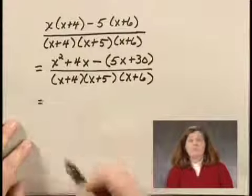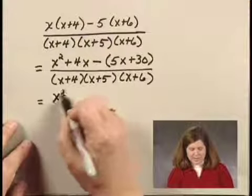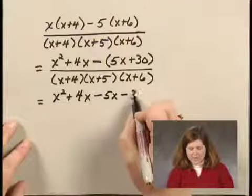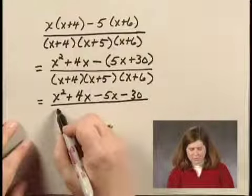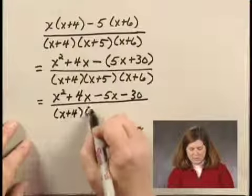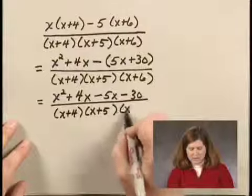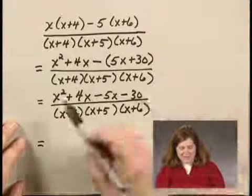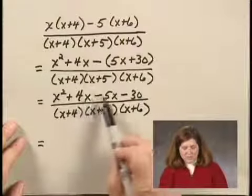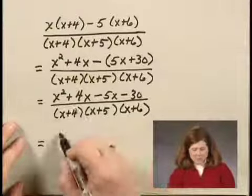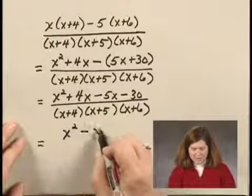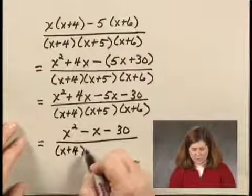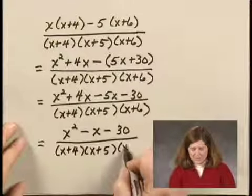Now I can remove the parentheses, and that gives me x squared plus 4x minus 5x minus 30, all over x plus 4 times x plus 5 times x plus 6. And finally, to simplify the numerator, I can combine like terms: 4x minus 5x gives me minus x. So I have x squared minus x minus 30 over x plus 4 times x plus 5 times x plus 6.